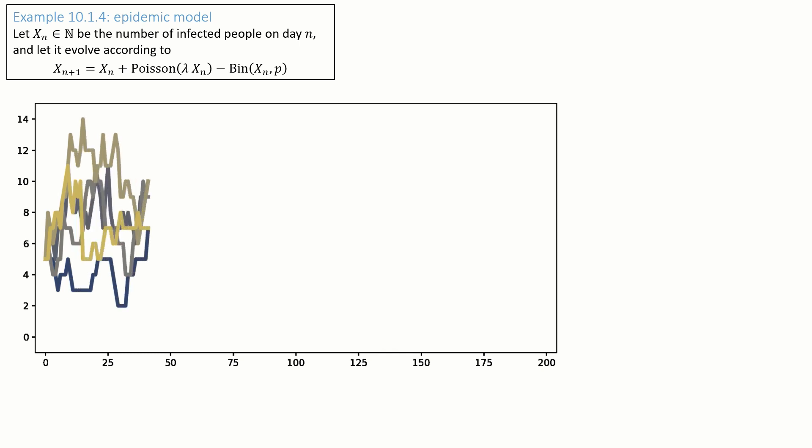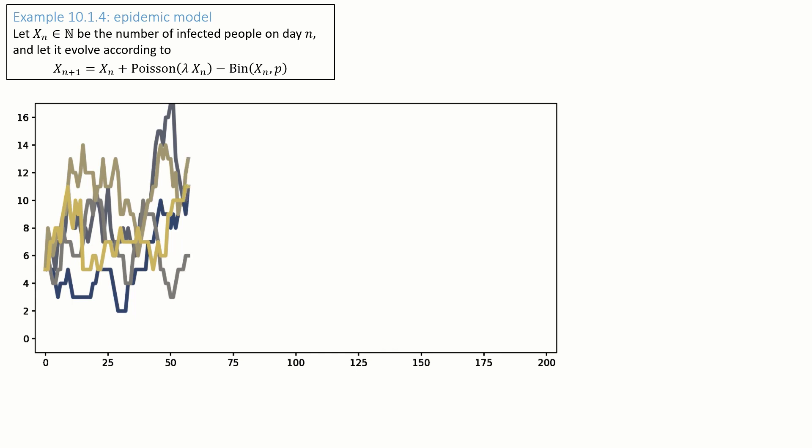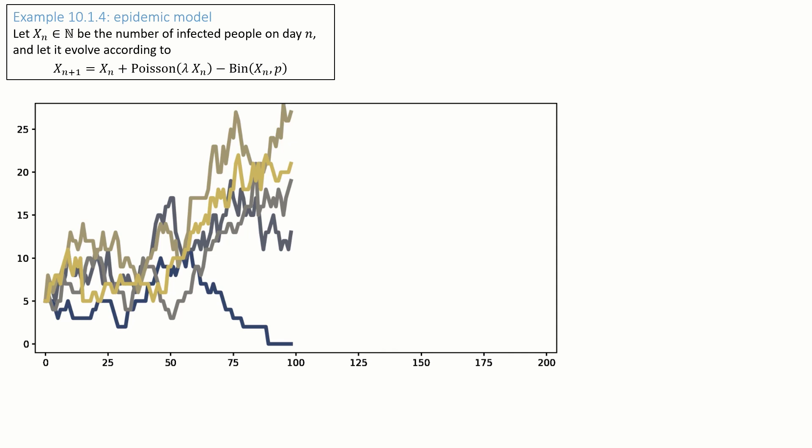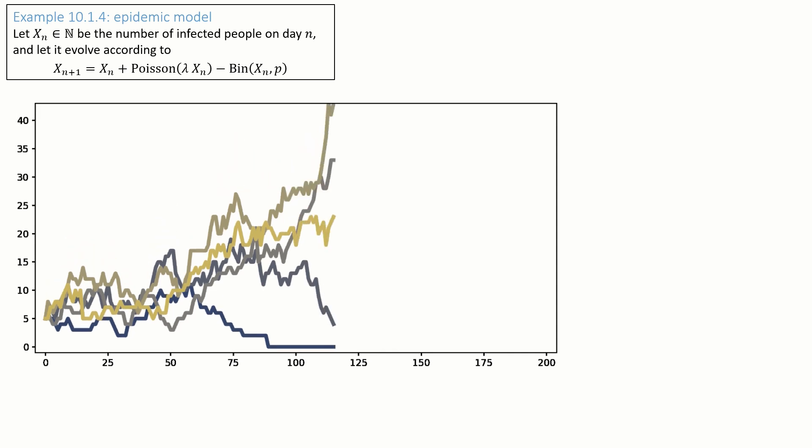I'm showing five different simulations here, all with exactly the same parameters. P is 7.1%, lambda is 0.079, and I've started them all at the same starting state, x0 equals 5.